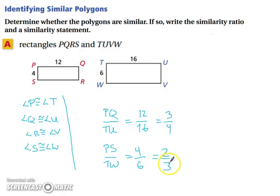3 fourths and 2 thirds are not the same. So, therefore, PQRS is not similar to TUVW.